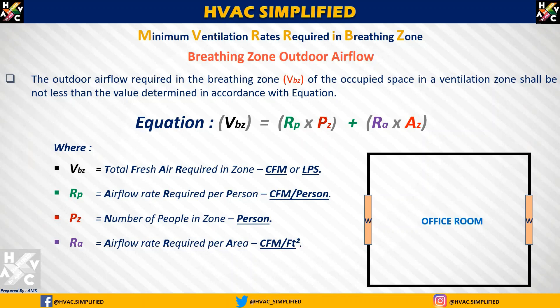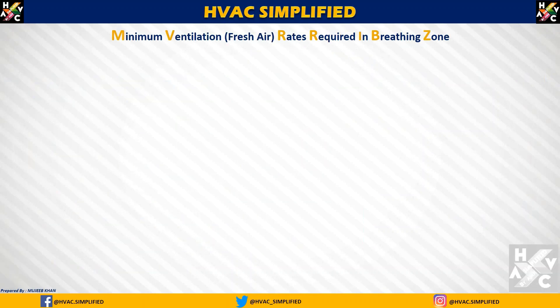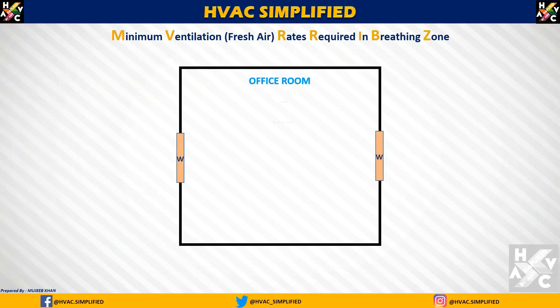RA is equal to air flow rate required per area in CFM per square feet। यह air flow rate required per area CFM per square feet जो कि हमें आशरे के table से मिलता है। AZ is equal to area of the zone in square feet — AZ जो है room का या zone का area होता है square feet में। अब हम example के द्वारा इस equation को calculate करते हैं और एक value determine करते हैं।